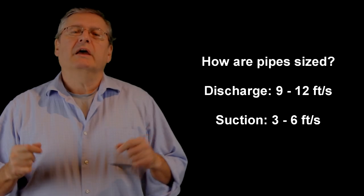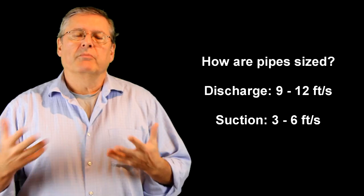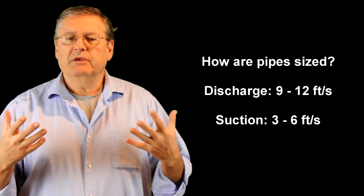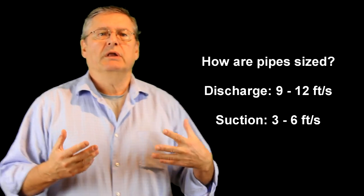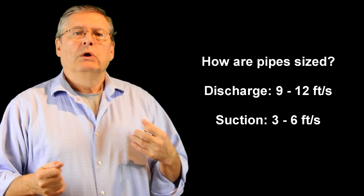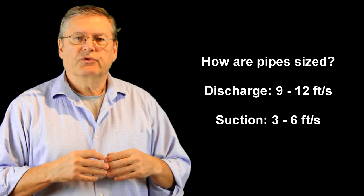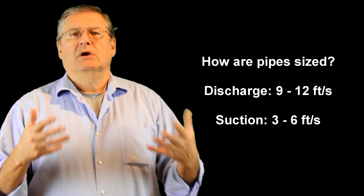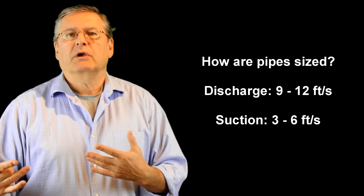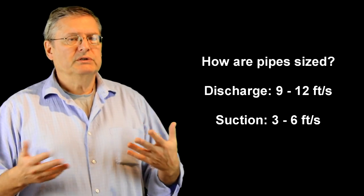How are pipes sized in systems? Well there's some guidelines. Generally speaking, on the discharge side we want the liquid to move rather a bit more quickly. We don't want the pipe size to be unnecessarily large. A good guideline is somewhere between nine feet per second and twelve feet per second. It could be less or more for various reasons.